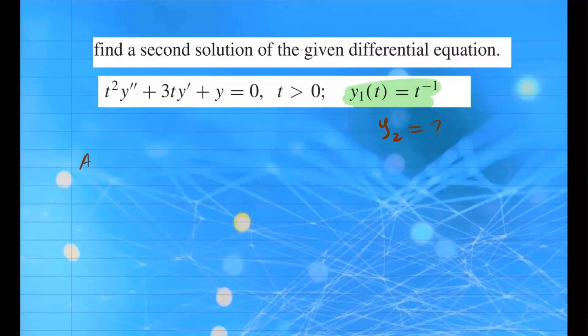We're going to assume that the general solution is equal to v of t, some function of t, times y1. To keep our writing simpler, I'll just write this as v times y1, where y1 is t to the negative 1. Then we compute its first derivative, second derivative, and plug everything into the equation to try to solve for it.